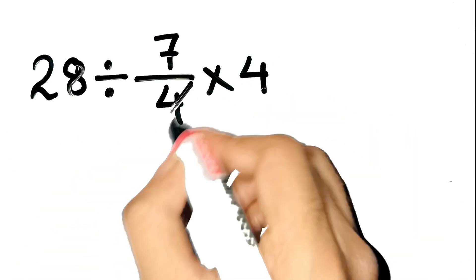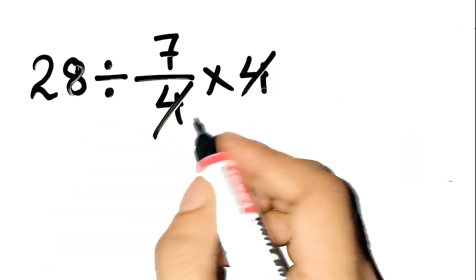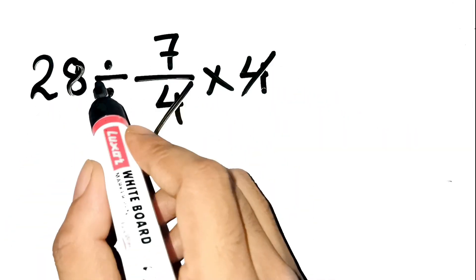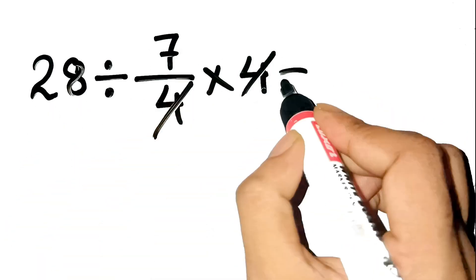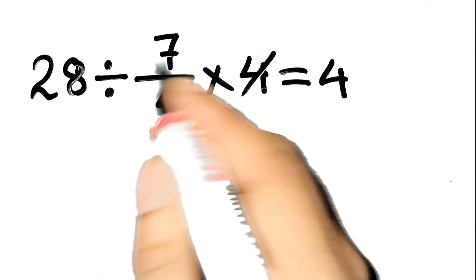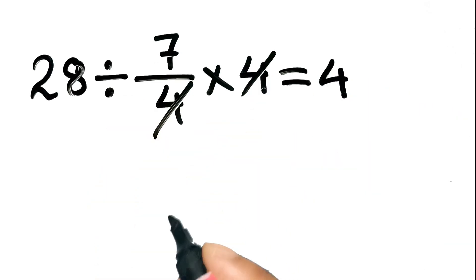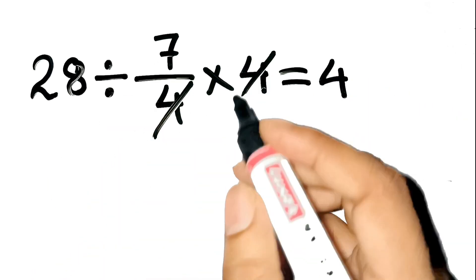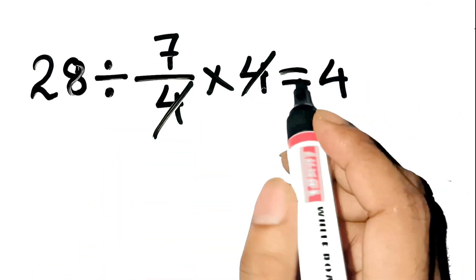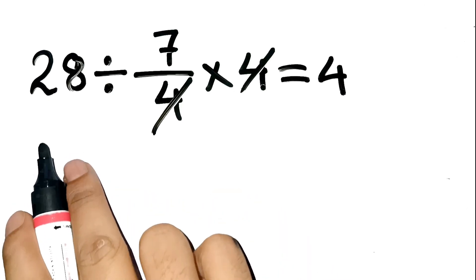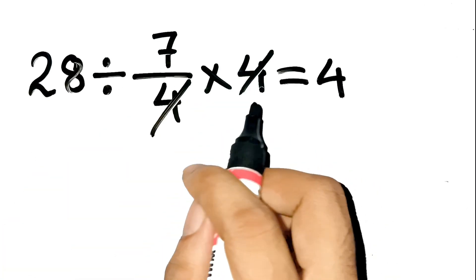The 4s cancel each other out, and then 28 divided by 7 is 4. Makes sense. Or does it? That's exactly where the trap is hiding.